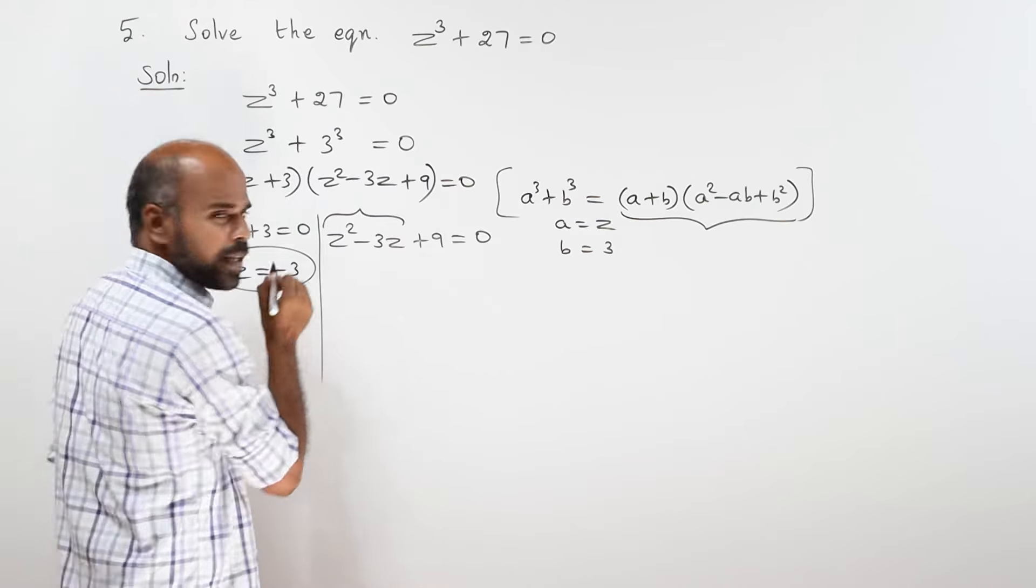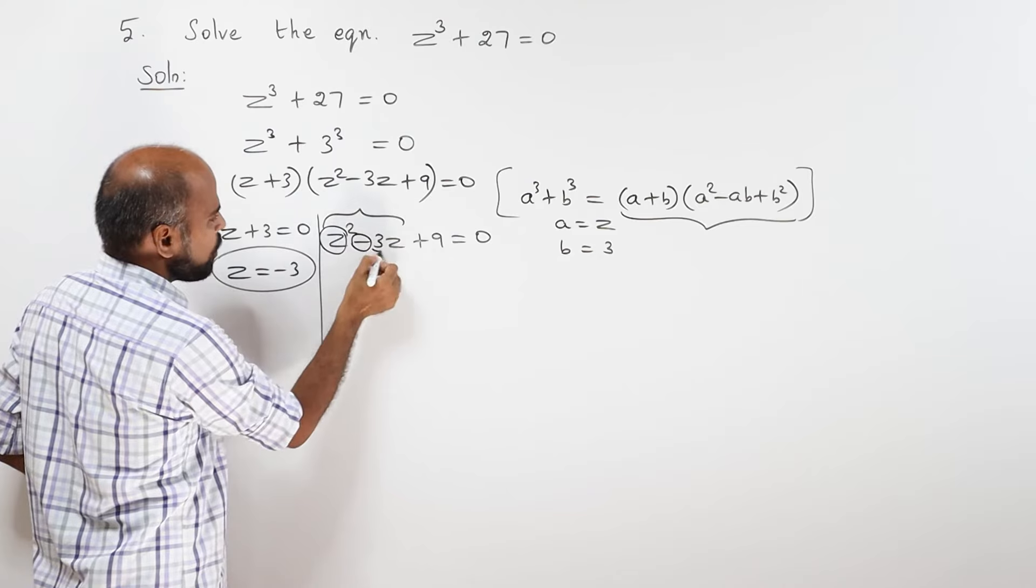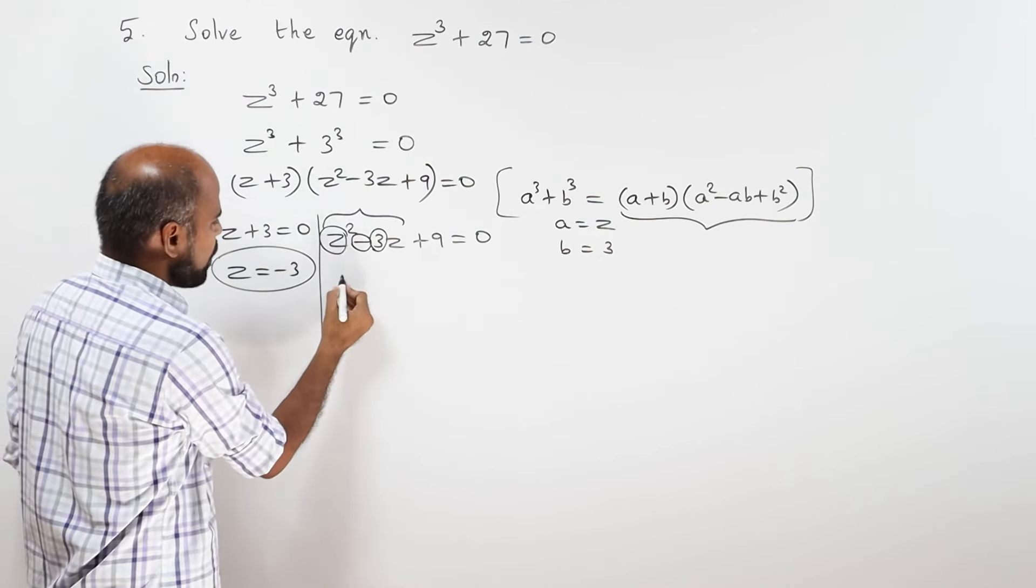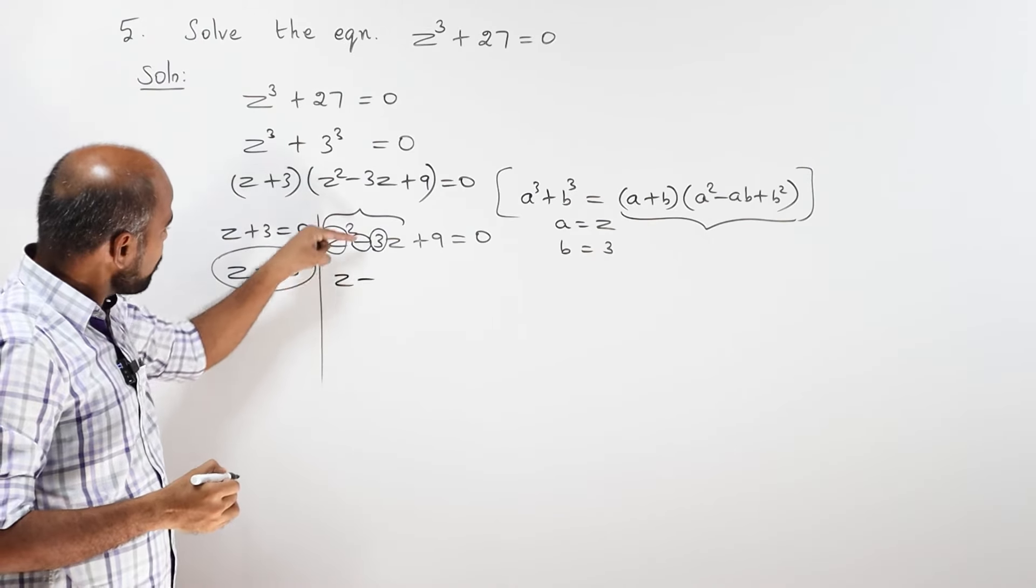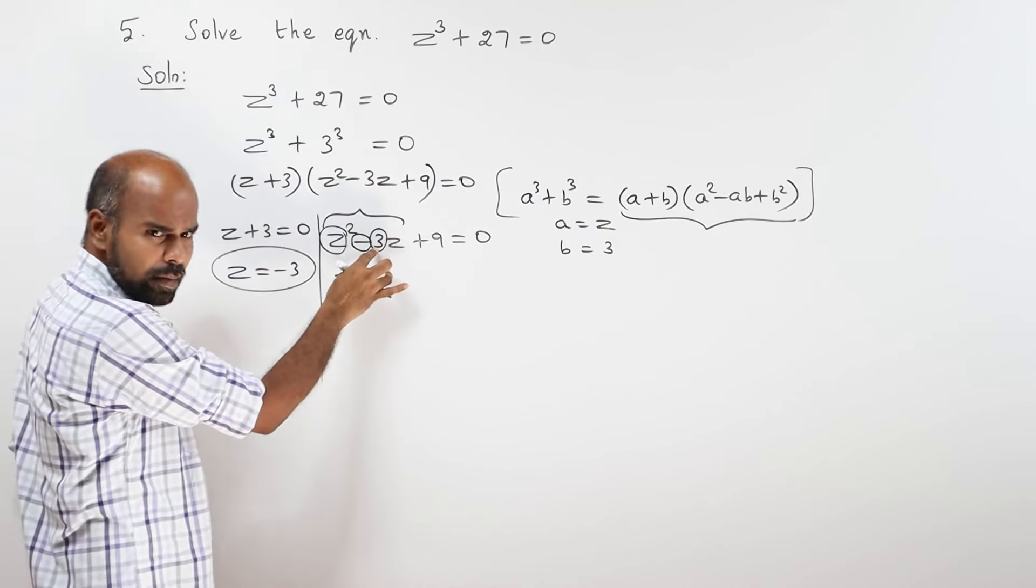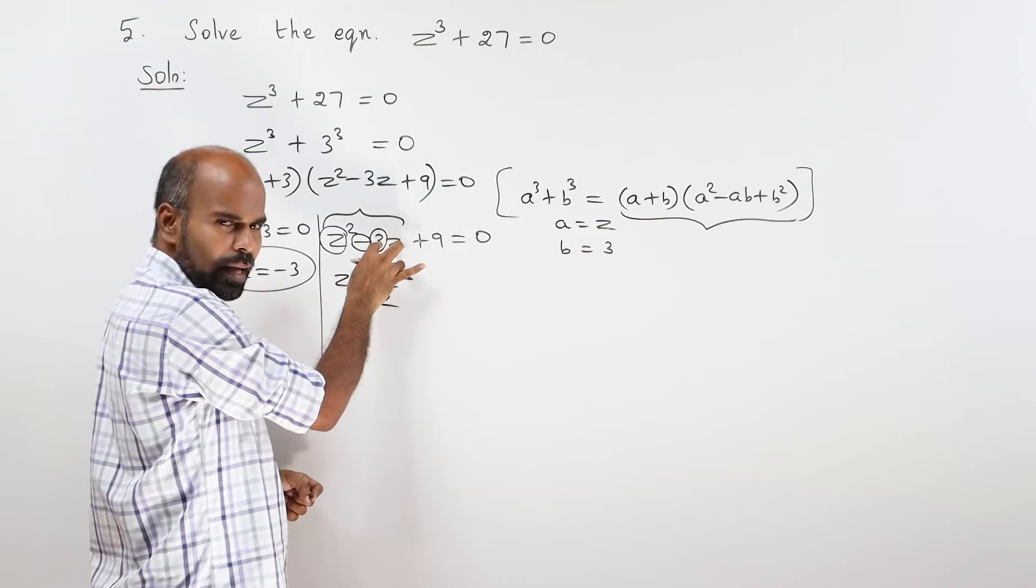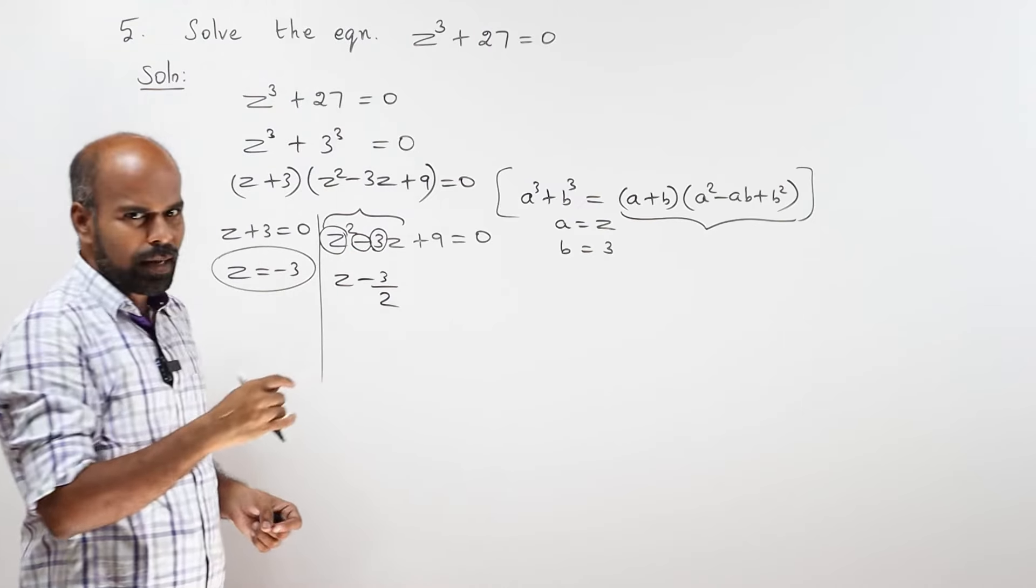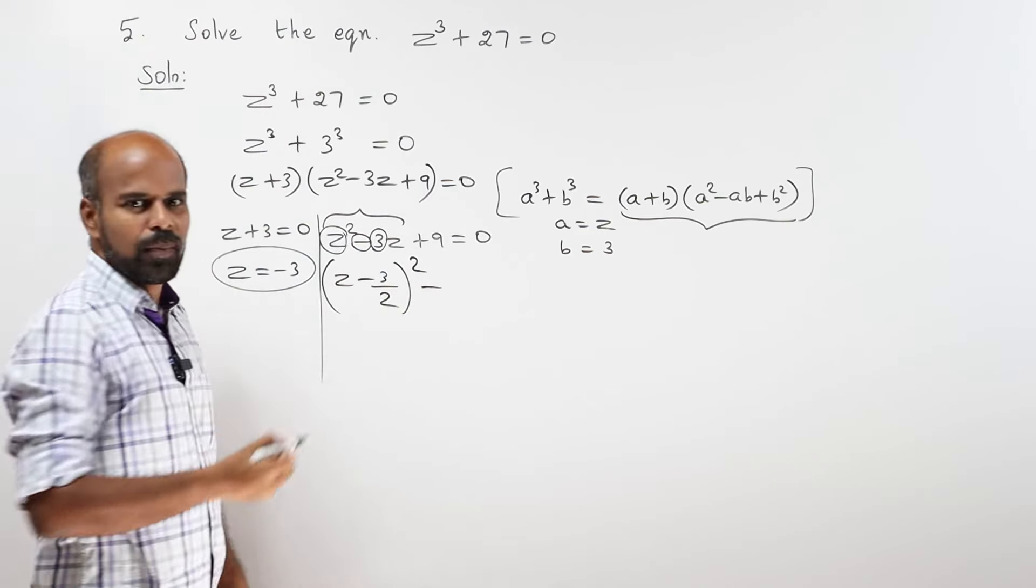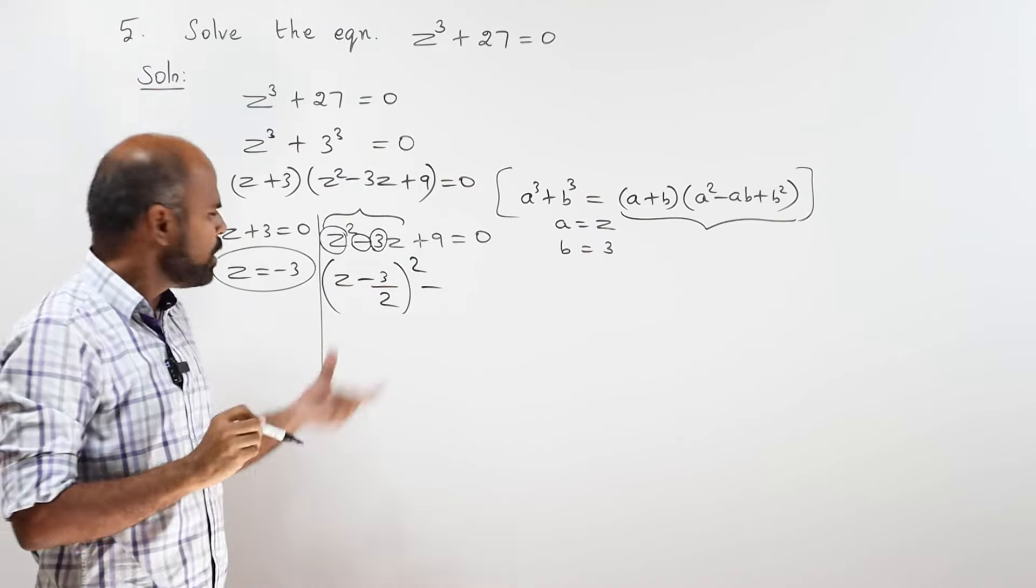This is z square, z square. This is the two terms. This is the three terms. Suppose 10, which is 10 by 25. Now, this value is the whole square. Here, this value is the whole square minus.